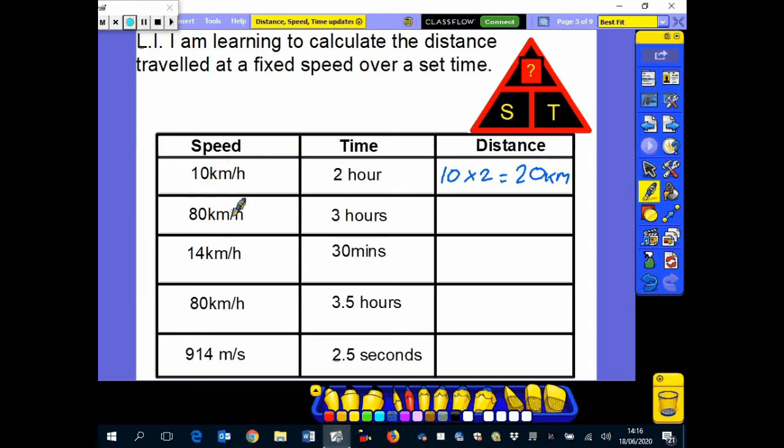In this one here we're going 80 kilometres per hour and we're doing 3 hours. So after 3 hours we will have done 80 times 3 which is going to be 240 kilometres.